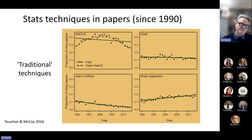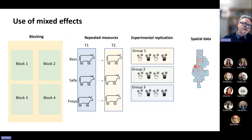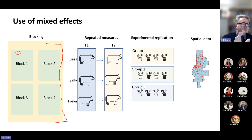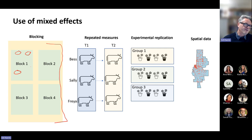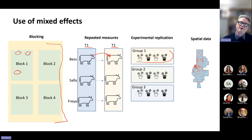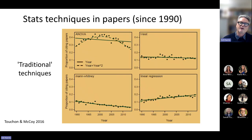Mixed effects models are important in field trials with blocks. We have blocks because spatially, plots within a block are non-independent. We apply treatments within blocks to account for that. Or if we do repeated measures on individual animals moving through treatment periods, or groups in a greenhouse, or plain spatial data — we use mixed effects to account for those non-independent structures. It's one of the most important tools.